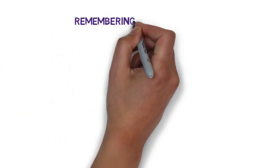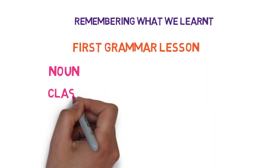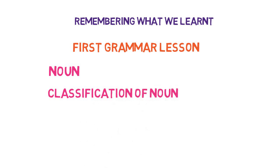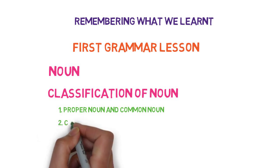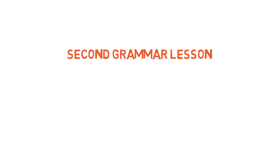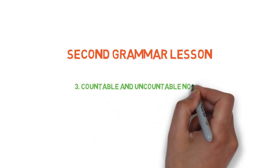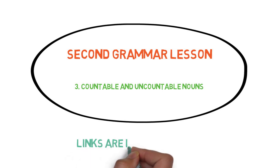Let's get started. Firstly, we will remember what we have learned already. In the first video, we discussed about nouns and their two classifications — proper noun and common noun, and collective noun. Then in the second grammar lesson, we discussed about the third category of noun, that was countable noun and uncountable noun. If you haven't watched those videos, I would highly recommend you to watch those videos first. I have given the links in the description.